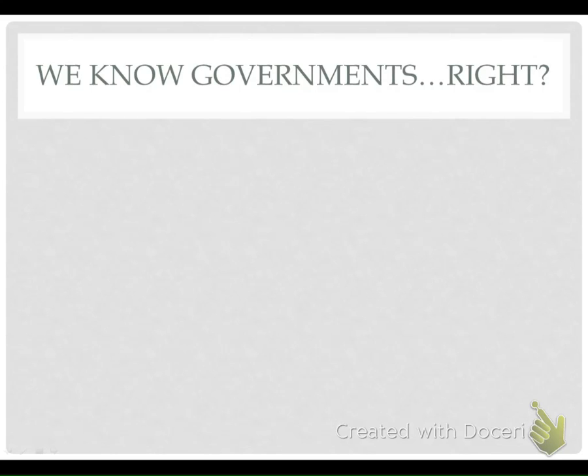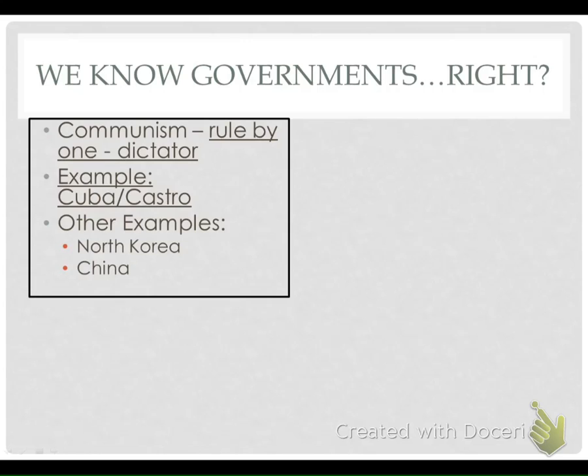First, we know governments, right? So this is going to be kind of a review of things we've talked about before. Communism — this is rule by one, a dictator. The best examples we've had are Cuba and Fidel Castro. Other examples include North Korea and China.